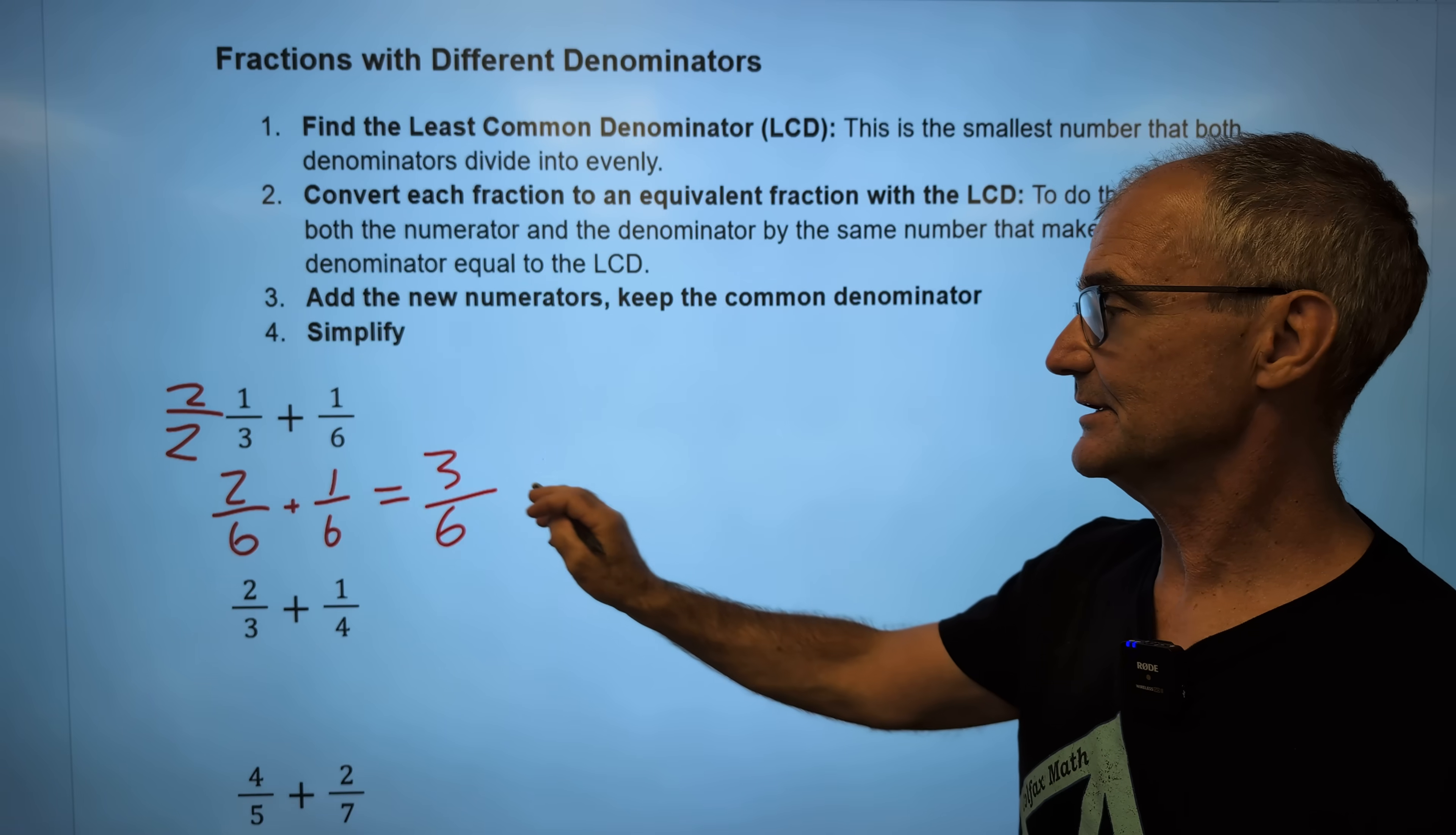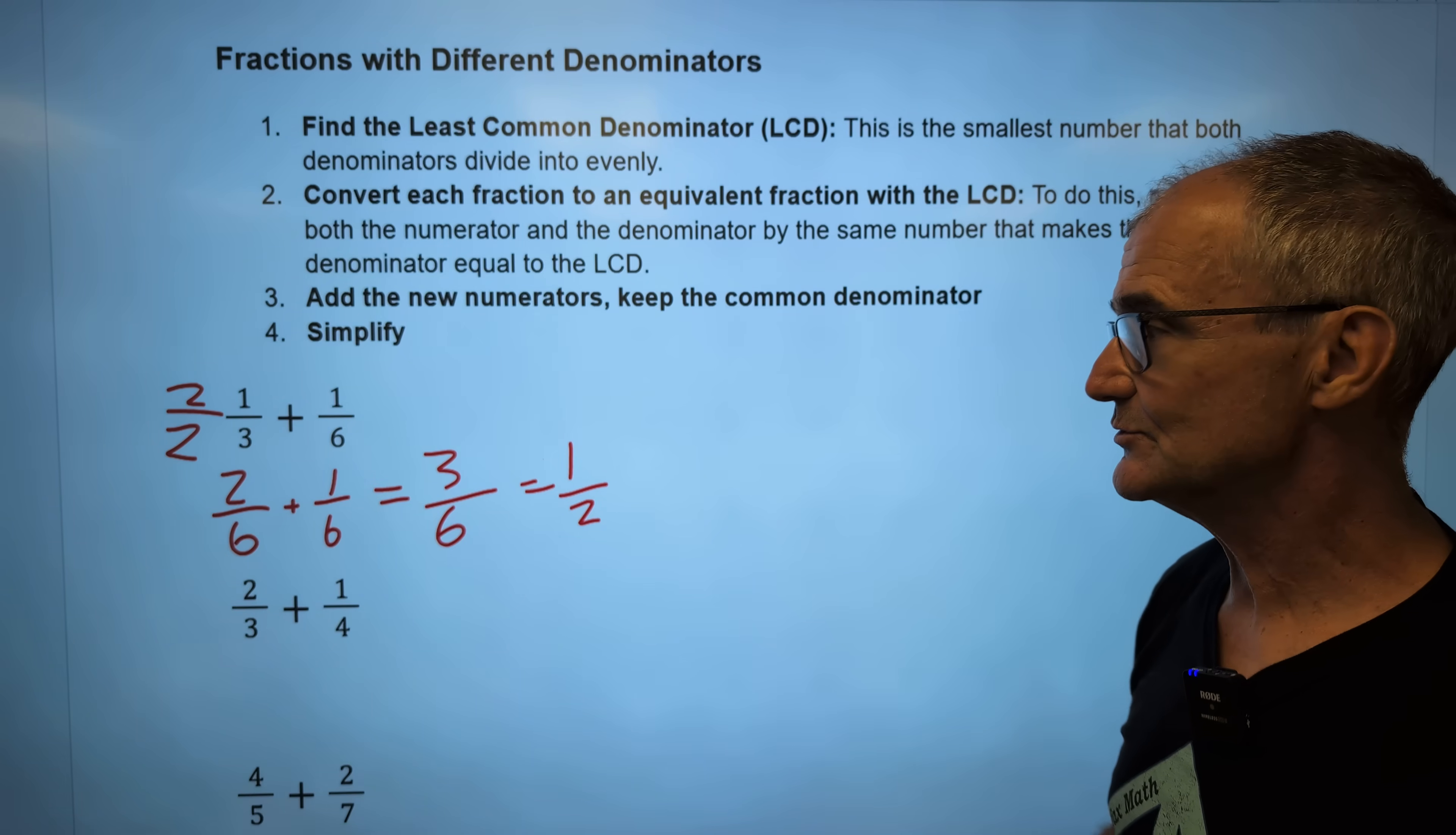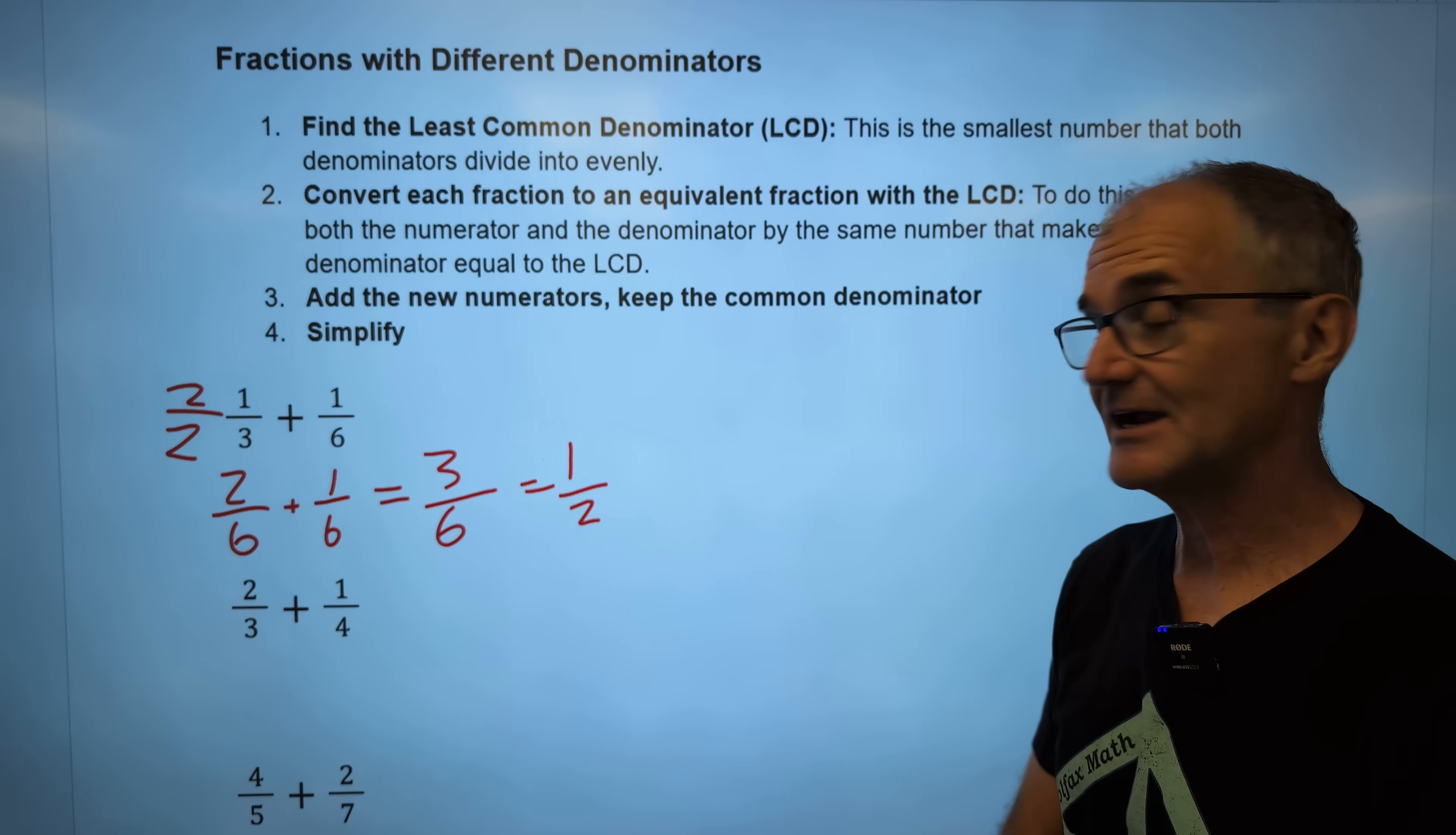Three will go into three one time. Three will go into six two times. These are equivalents. They have the same weight. If you give me half of a dollar, it is the equivalent of 50 cents. This is just a reduced fraction.